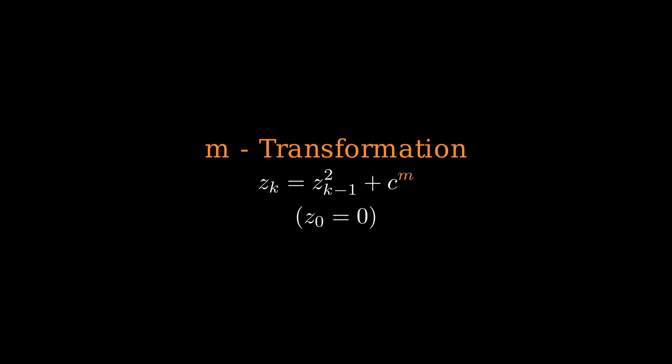So a complex value C is considered in the transformed set, and therefore the corresponding pixel painted black, if and only if the complex value C raised to the power M is in the Mandelbrot set.